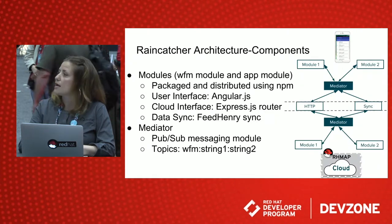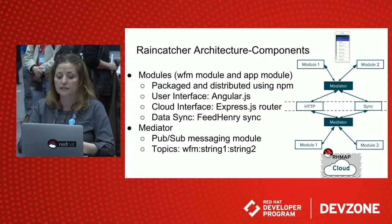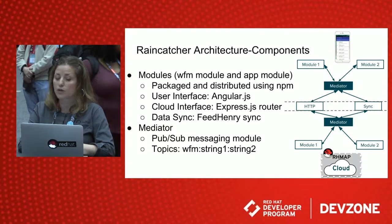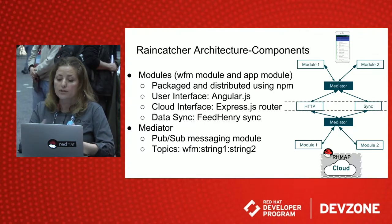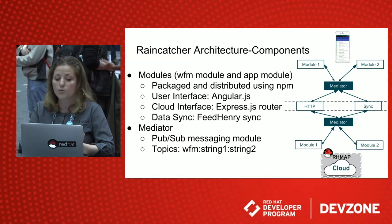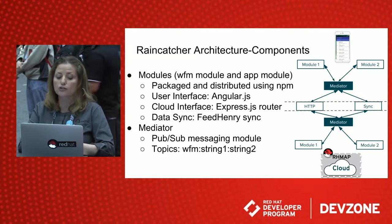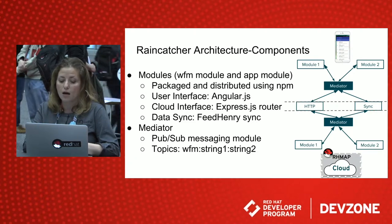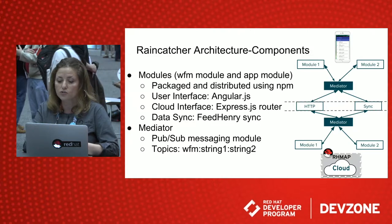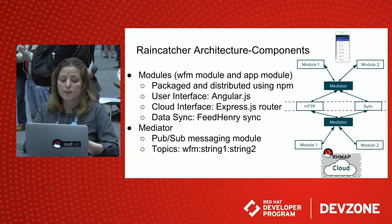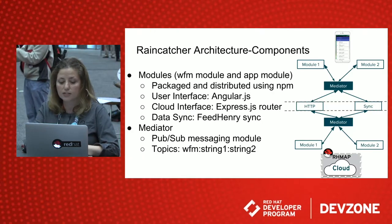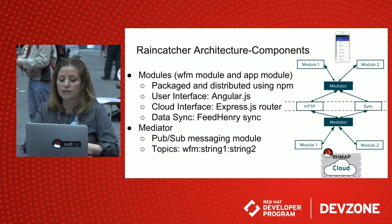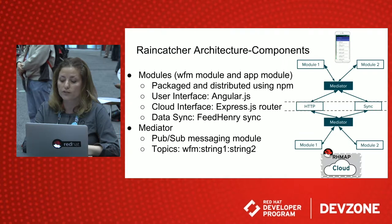Let's go a little deeper into how RainCatcher is developed and architected. RainCatcher is heavily based on modules. You can create your own module, and there are also WFM modules that come packaged with this feature. A module can have a UI user interface using Angular.js — it could be on the phone or on the cloud, where we use Node.js and Express.js for routing. Modules communicate with each other using sync or HTTP. Modules don't talk to each other directly — they use a special module called a mediator, which is a publish-subscribe messaging queue. If you want to talk to a different module, you subscribe to their topic or publish your own topic, and topics are represented by a URL or a string starting with WFM.